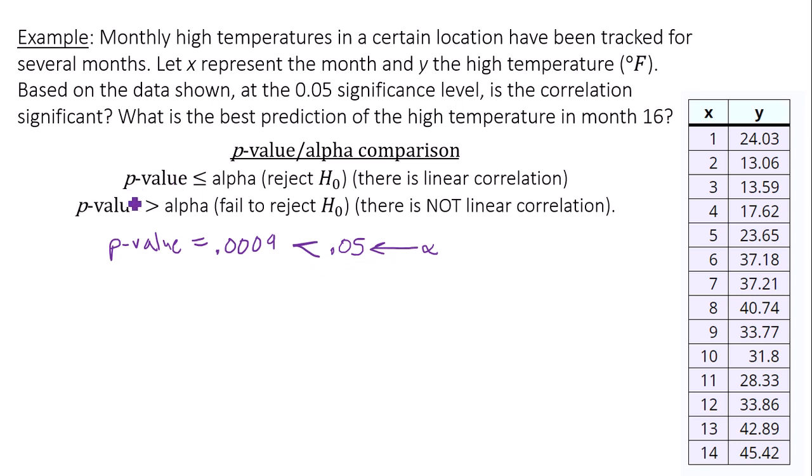So since we're below alpha or less than alpha, there is linear correlation.